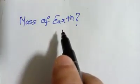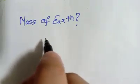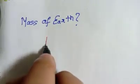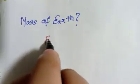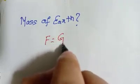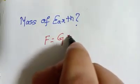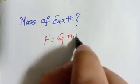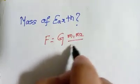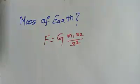Now, Isaac Newton published in 1686 a very famous formula, which is F equals to G M1 M2 whole divided by R squared. We are quite familiar about this formula.